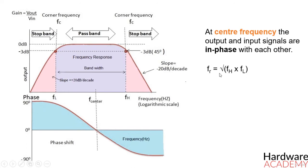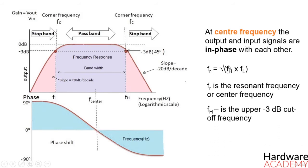Where FR is the resonant frequency or center frequency, FH is the upper minus 3dB cutoff frequency, and FL is the lower minus 3dB cutoff frequency.